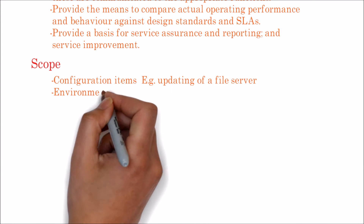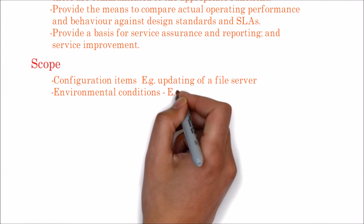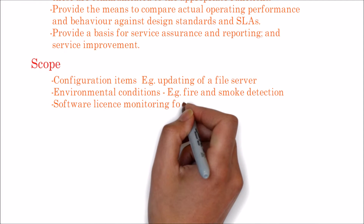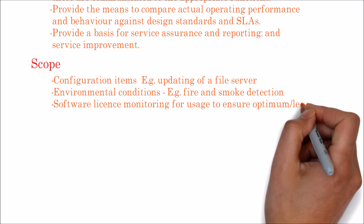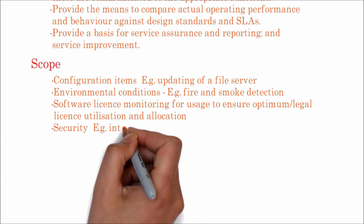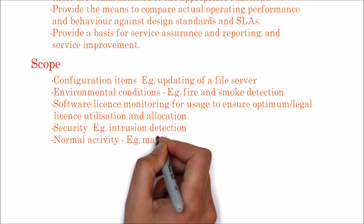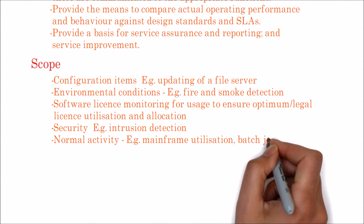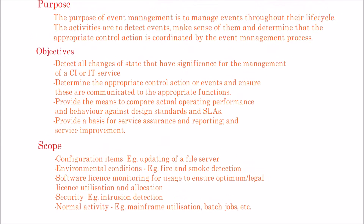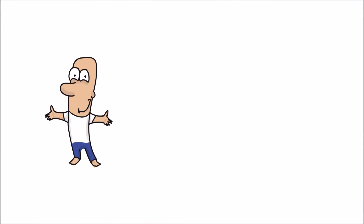It includes configuration items — example: updating of a file server; environmental conditions — example: fire and smoke detection; software license monitoring for usage to ensure optimum or legal license utilization and allocation; security — example: intrusion detection; and normal activity — example: mainframe utilization and batch processing, such as email monitoring.